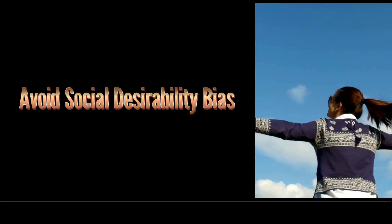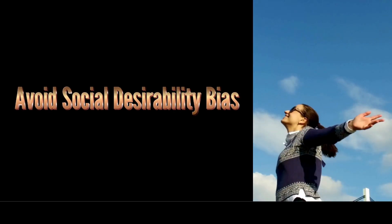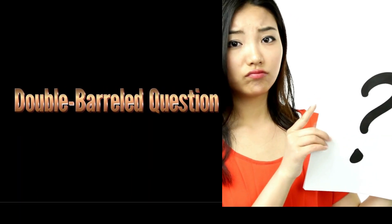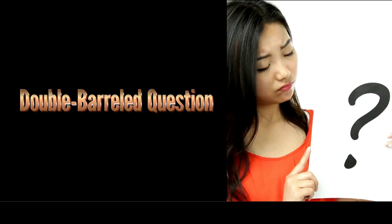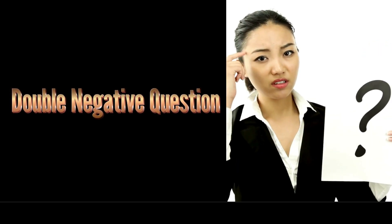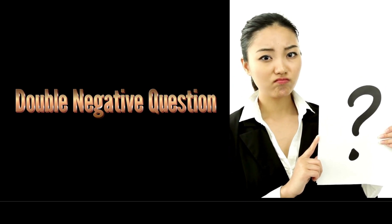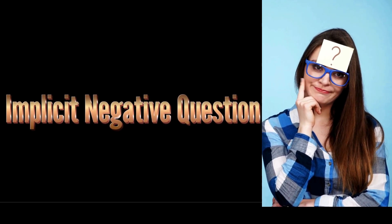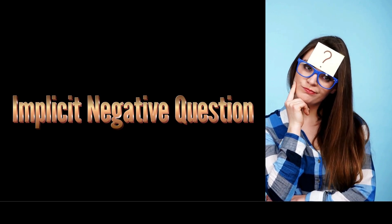There is always a social desirability bias — a good question avoids phrasing that may push respondents to give answers they think are more socially acceptable rather than their true opinion or behaviour. A double-barrelled question asks about two different things at the same time, making it unclear which part the respondent is answering — for example, 'Do you think the government should improve healthcare and education?' A double negative question uses two negative terms which can confuse respondents, for example: 'Do you disagree that the company should not reduce employee benefits?' An implicit negative question is one where the negative aspect is implied rather than stated directly — for example, 'How often do you avoid using public transportation?'